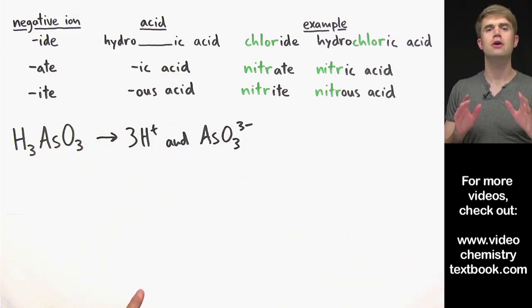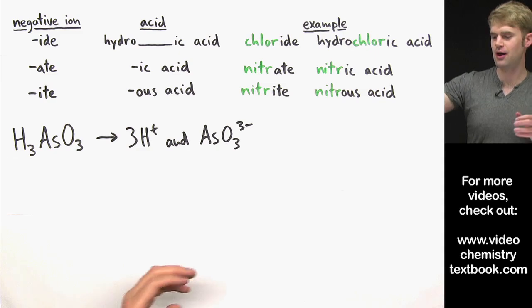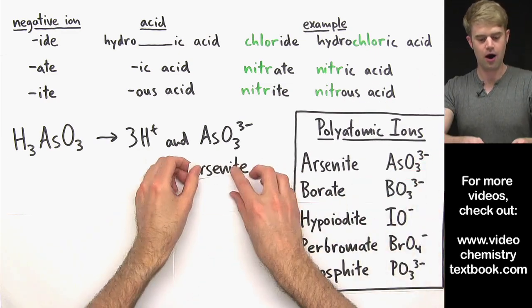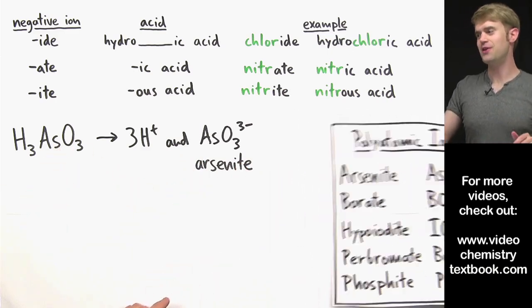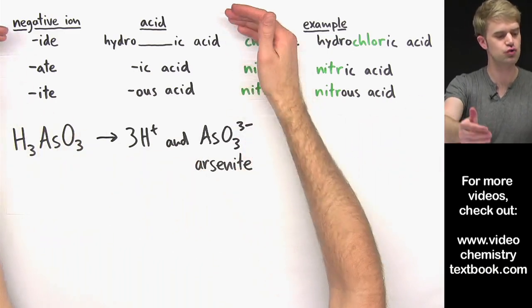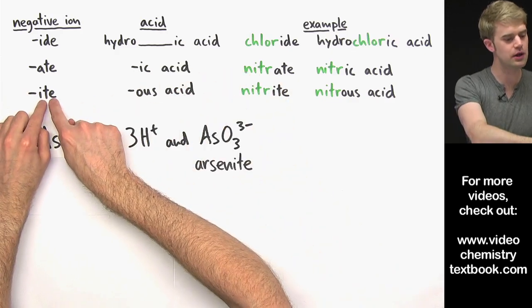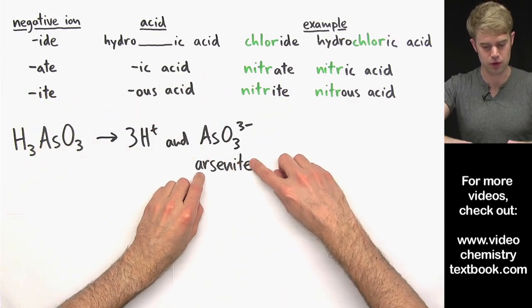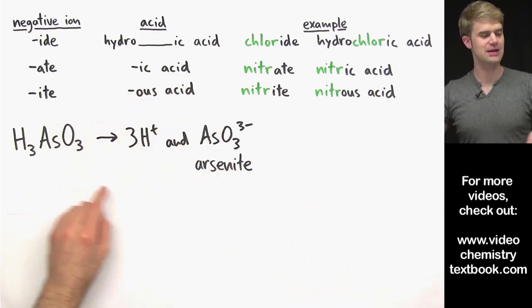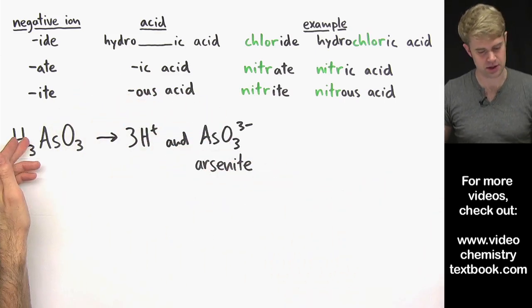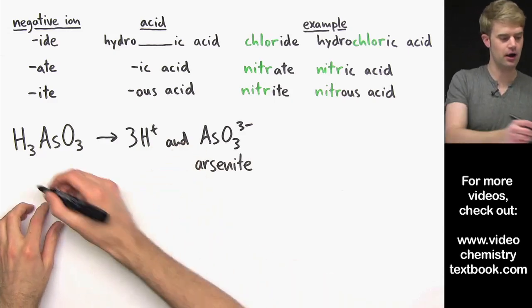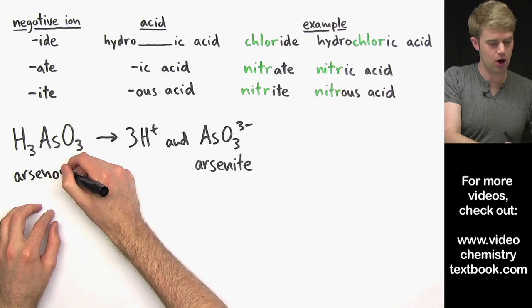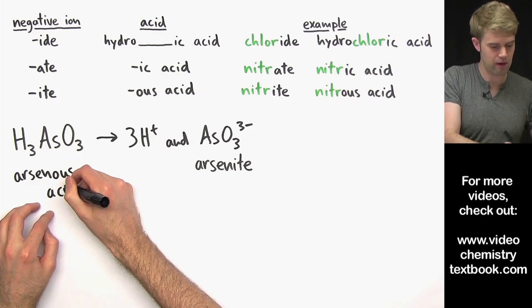This is a polyatomic ion. I've got to figure out what its name is. So let me pull out this chart. AsO3 3- is called arsenite. Now that I know the name of the negative ion, I can go to these rules. Which of them do I want to use? I want to use this one here where the ion ends in ITE. I'm going to remove the ITE and put on ous acid. So the name of this acid that contains this negative ion is going to be arsenous acid.